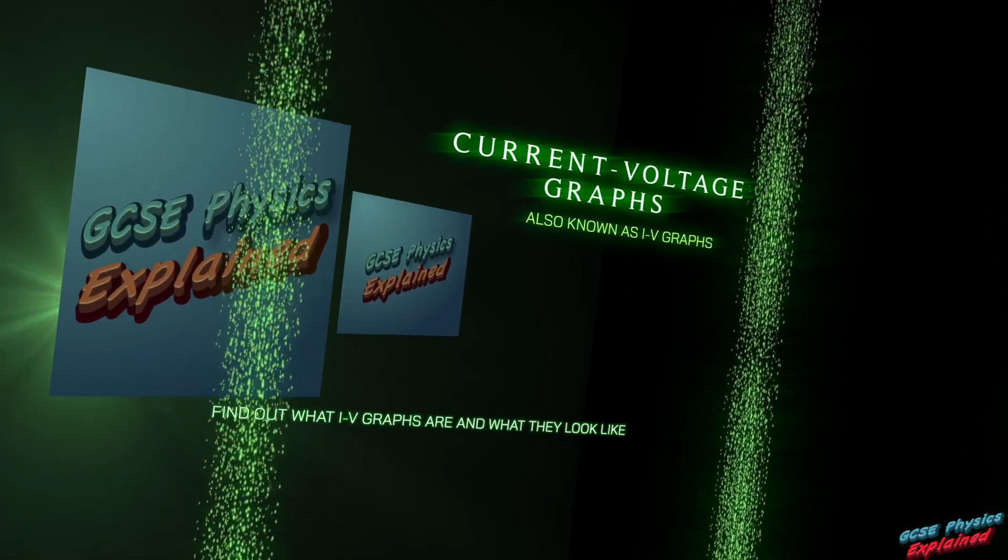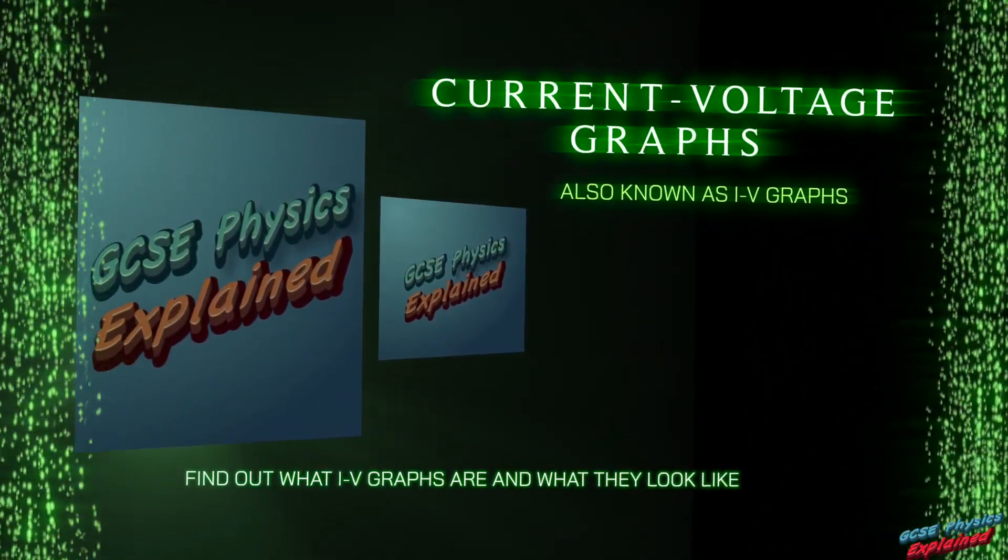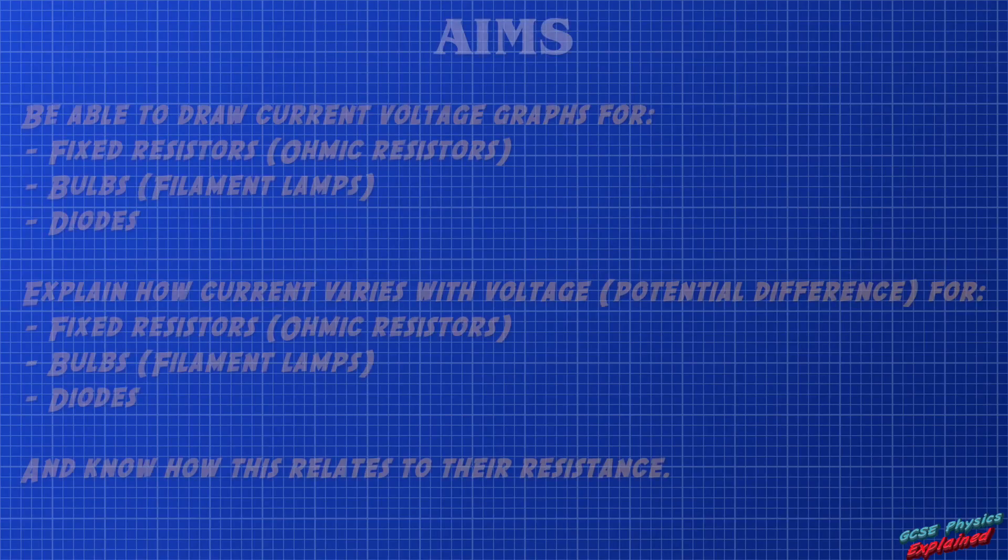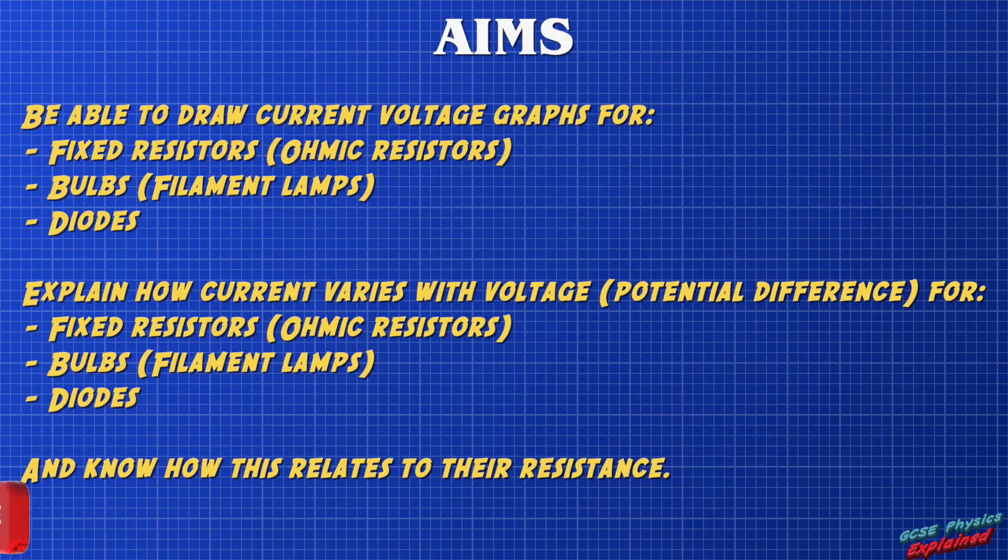Current Voltage Graphs, also known as IV Graphs. By the end of the video you'll be able to draw current voltage graphs for fixed resistors, also known as ohmic resistors, bulbs also known as filament lamps, and diodes.